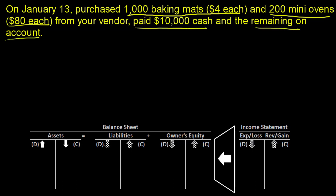So what are we doing? We're increasing some of our assets with inventory and decreasing some of our assets with cash. We also have things on account, which is a liability, meaning we're going to have to pay it in the future — which means we're going to have a credit associated with some liability account. Let's start with the things we can touch, because it always makes it easier to know what's happening.